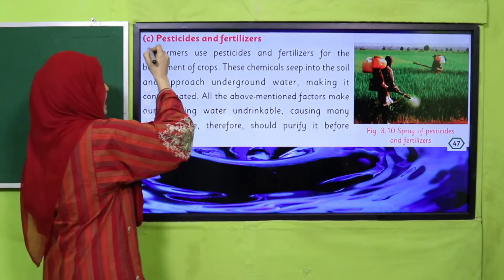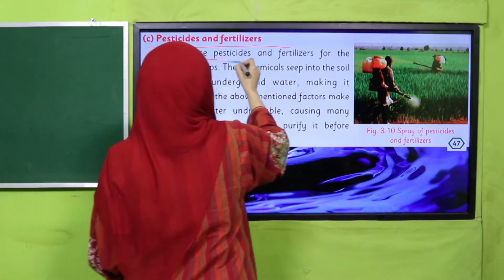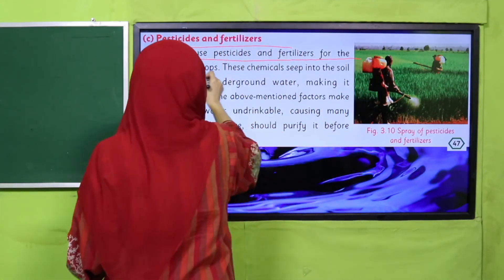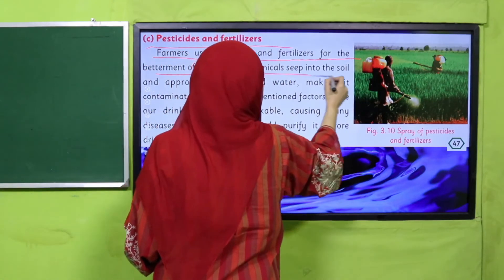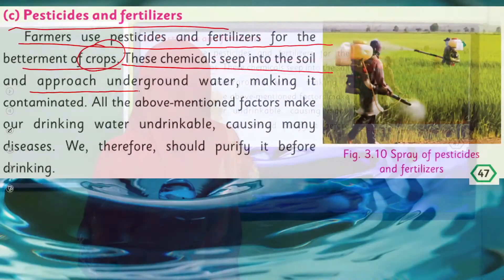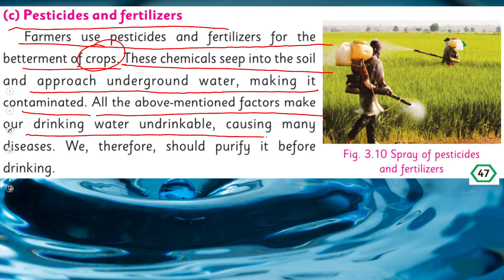Next is pesticides and fertilizers. Farmers use pesticides and fertilizers for the betterment of crops. These chemicals seep into the soil and reach underground water, making it contaminated. All the above-mentioned factors make our drinking water undrinkable, causing many diseases. We therefore should purify water before drinking.